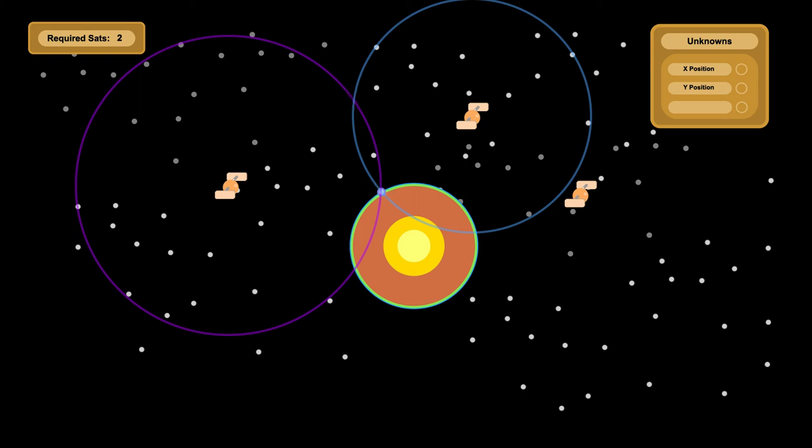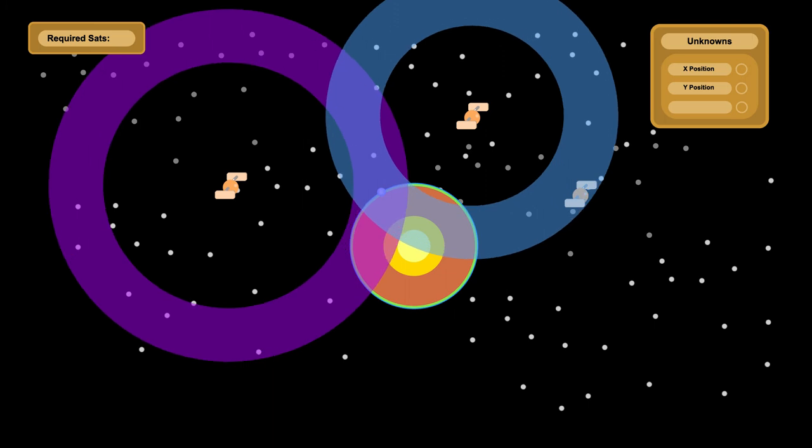But there's still the issue of clock bias making it very unclear what the distances actually are. Fortunately, because all the satellite clocks are in sync with each other, the clock bias is the same for all of them. This means it just becomes another unknown.